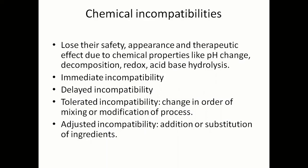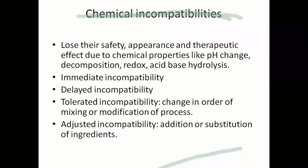Next is delayed incompatibility. In delayed incompatibility, there is a slow reaction. When a reaction takes place in more than one or two steps, the slowest step determines the rate of reaction — that is the time required for that slowest step to complete. Sometimes two substances come in contact but the reaction is not immediate; it may take a long period — like seven days, ten days, or in some cases even months. That kind of incompatibility is called delayed incompatibility.